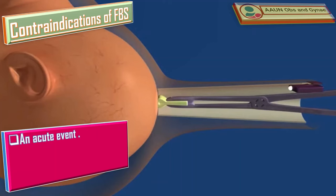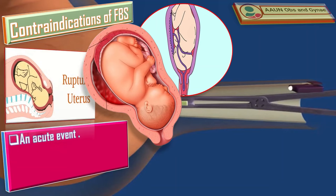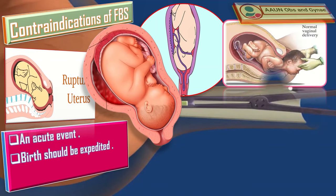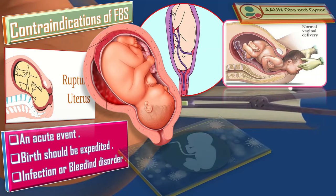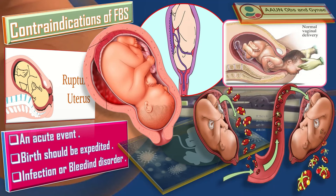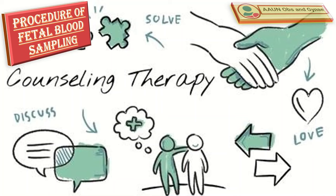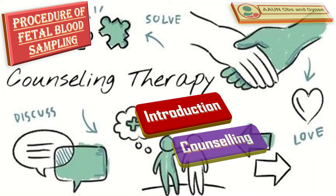Do not carry out fetal blood sampling if there is an acute event, for example cord prolapse, suspected placental abruption, or suspected uterine rupture, or if the whole clinical picture indicates that the birth should be expedited. The contraindications are also present when there are risks of maternal to fetal transmission of infection, or risk of fetal bleeding disorders.